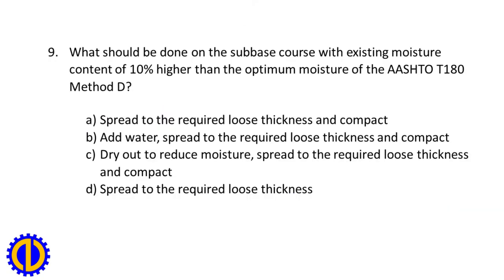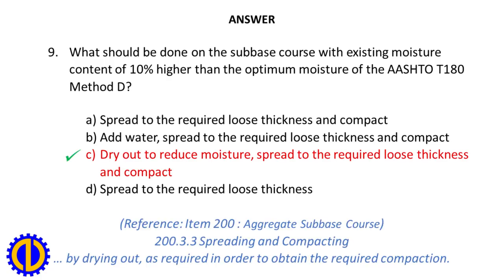Question 9. What should be done on the subbase course with existing moisture content 10% higher than the optimum moisture of the AASHTO T180 Method D? A. Spread to the required loose thickness and compact. B. Add water, spread to the required loose thickness and compact. C. Dry out to reduce moisture, spread to the required loose thickness and compact. D. Spread to the required loose thickness. Answer: C. Dry out to reduce moisture, spread to the required loose thickness and compact.